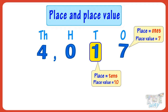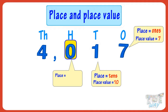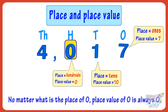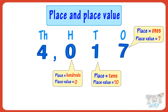One ten is 10. The place of zero is hundreds and the place value is zero hundreds, or zero. No matter what the place of zero is, the place value of zero is always zero. The place of four is thousands.